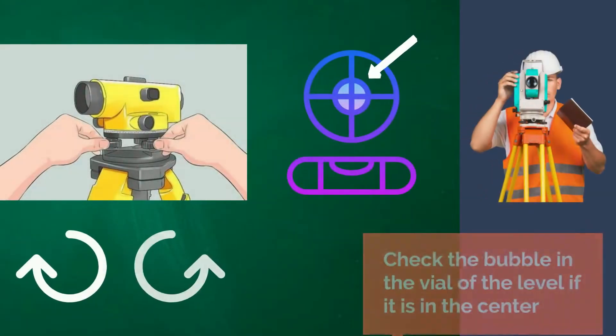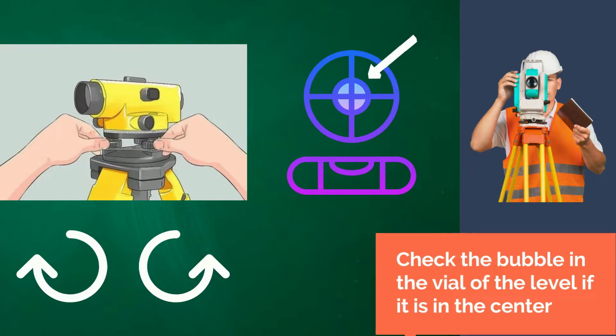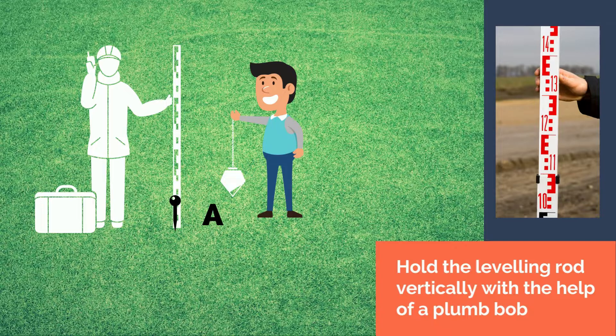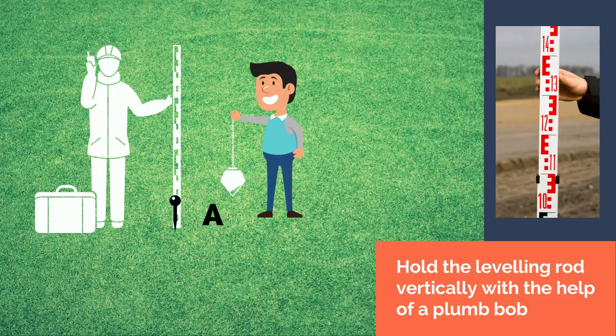Make sure to check the bubble in the vial of the level if it is in the center. If not, adjust the screws by rotating clockwise or counterclockwise. After setting up the instrument, the rodman at point A should hold the leveling rod vertically with the help of the plumb bob.